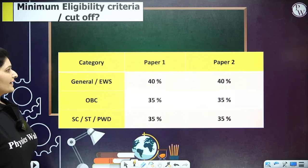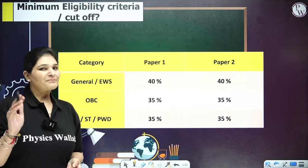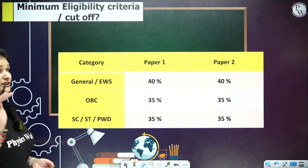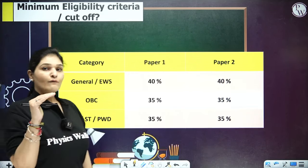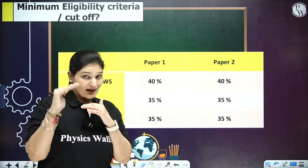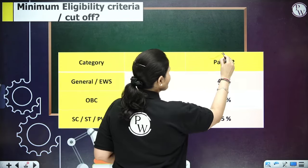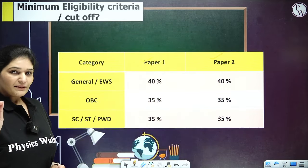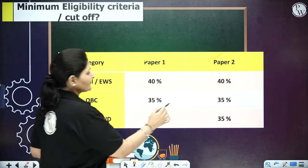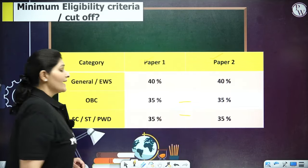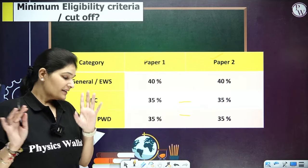34% of questions are assigned from Paper 1 and 66% from Paper 2. This is a norm-based test — top 6% get NET and top 1% get JRF. However, your paper must also meet basic eligibility: general category students need 40% aggregate across Paper 1 and Paper 2, while other categories need 35%. So you must prepare for Paper 1 alongside Paper 2 Education.